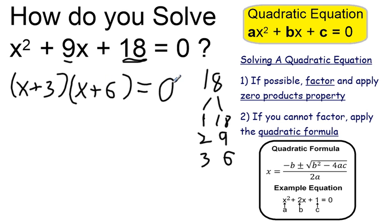I can apply the zero products property, which tells me that if either of these binomials equals 0, the whole thing equals 0, because if you multiply anything by 0, the whole thing becomes 0.